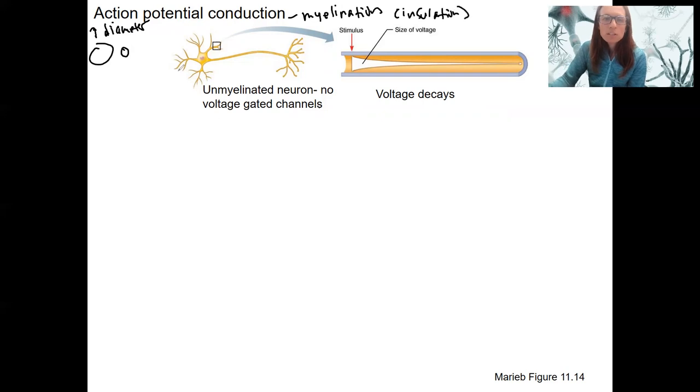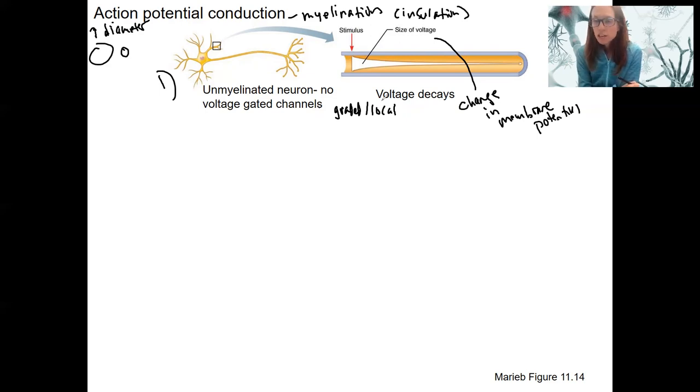So first, what I want to do is give you a scenario. One, where we have unmyelinated neurons and no voltage-gated channels. In this scenario, we don't have propagation. So the stimulus is going to occur. And the size of voltage, that means the same thing as saying the change in membrane potential, the amount of depolarization, is going to decrease or decay over the length of the axon, just like a graded or a local potential. That's what would occur if we didn't have voltage-gated channels. This is what makes cells excitable, is to have voltage-gated channels.